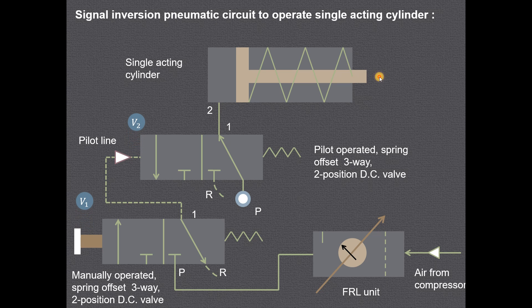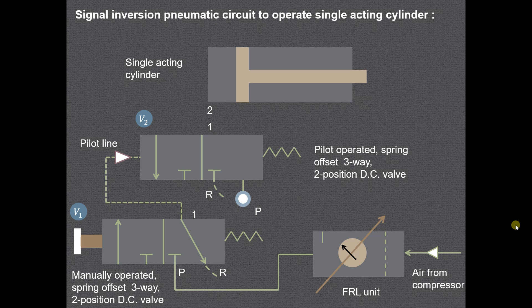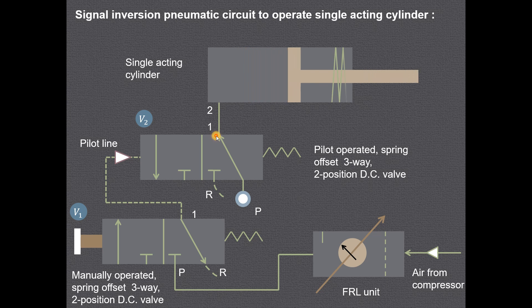With the help of the animation, we can see that when valve V1 is on, V2 is off, and when V2 is off, the cylinder will be on. Air goes from port P to port 1, then from port 1 to port 2, causing the forward motion of the piston and compressing the spring. That is our first position.